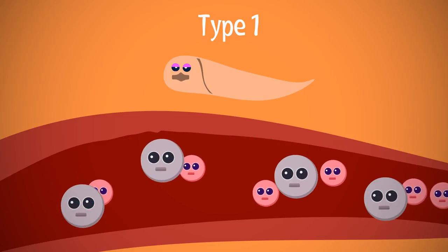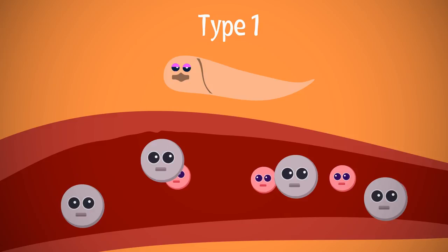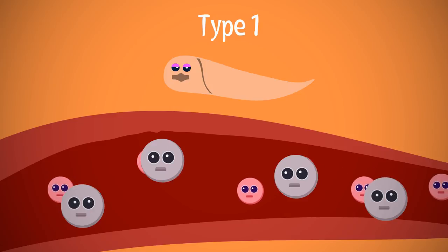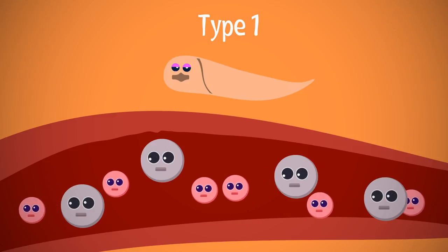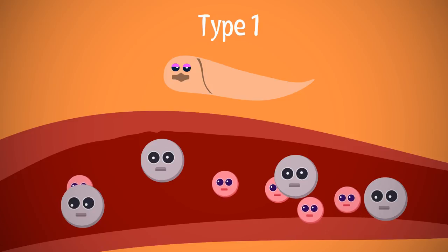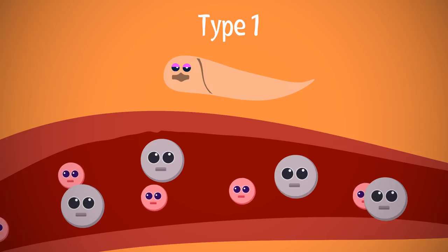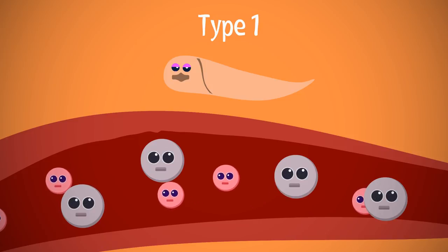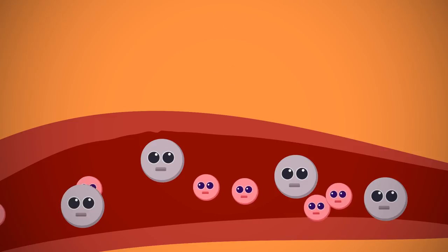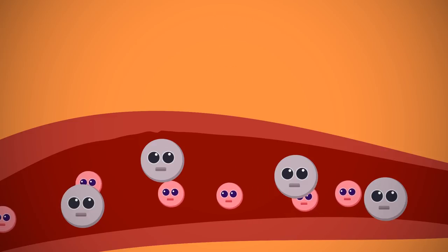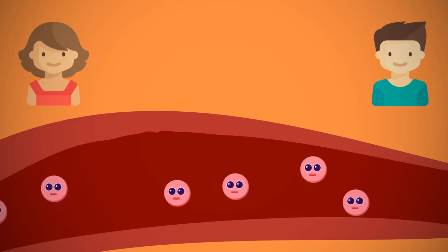Type 1 diabetes is caused by autoimmune destruction of the pancreatic beta cells that produce insulin. The main cause is unknown, however it is believed to involve a combination of genetic and environmental factors. It is usually more likely if a family member already has this condition.